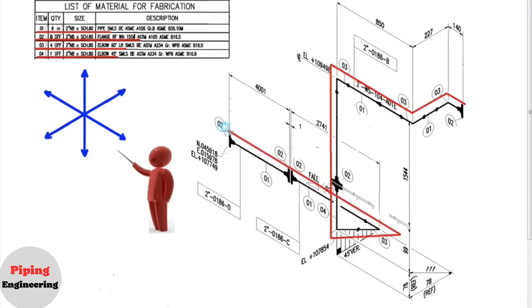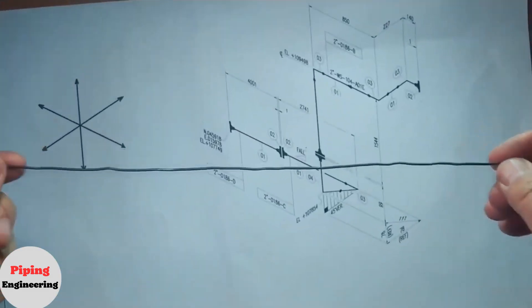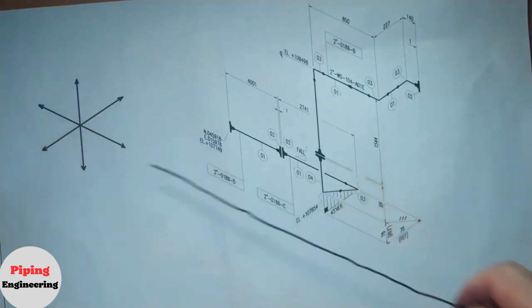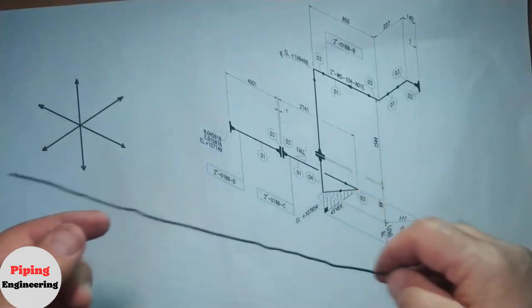Let's bend the wire according to the pipe drawing. This is our wire. Let's bend the wire of this pipe isometry with the help of these directions.